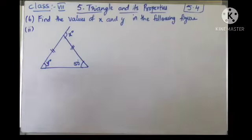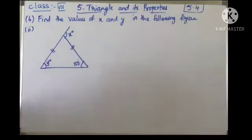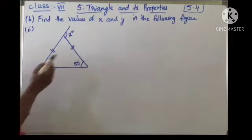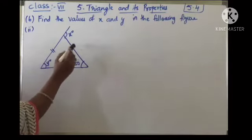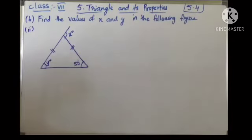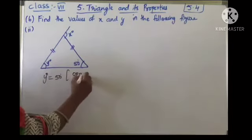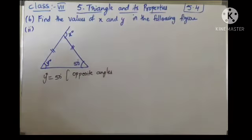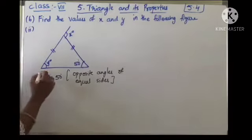Coming to the second figure, here is a triangle given. x is the exterior angle and y and 50 are interior angles. We should find x and y. It is an isosceles triangle — the opposite angles of the equal sides are equal. These two sides are equal, so the opposite angles are equal. So I can take angle y as 50 degrees — angles in an isosceles triangle.